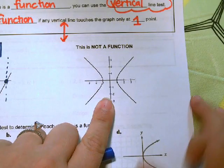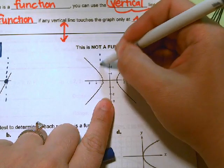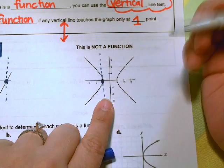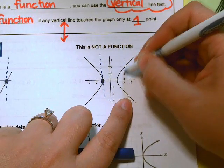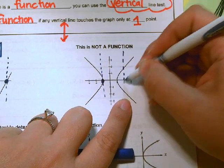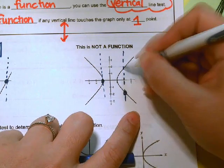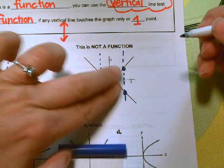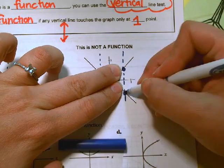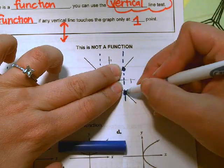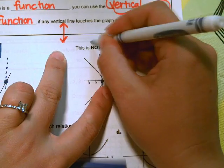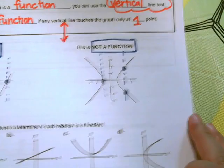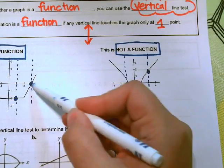Looking at this next graph, if I draw an imaginary vertical line through x equals one, it only touches once. But if I draw a vertical line through x equals two, it touches the graph twice. So because I found a spot where it hits the graph twice, it is not a function, because every x can only have one y.